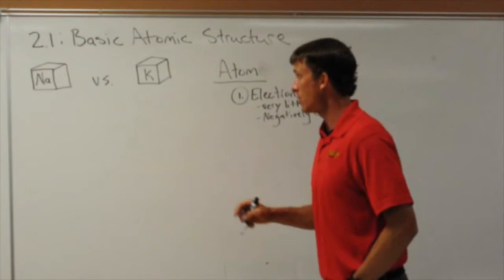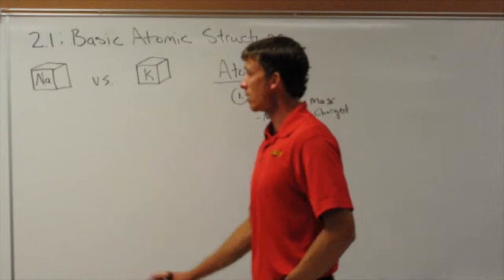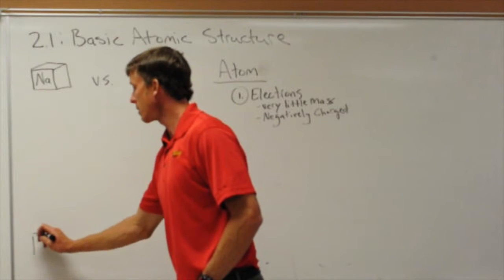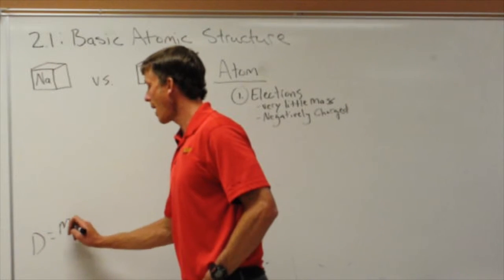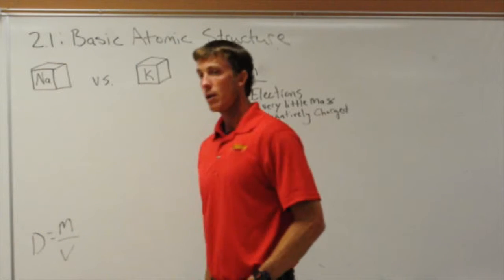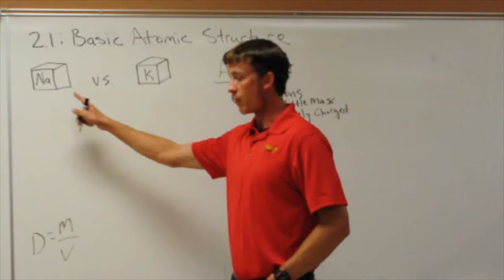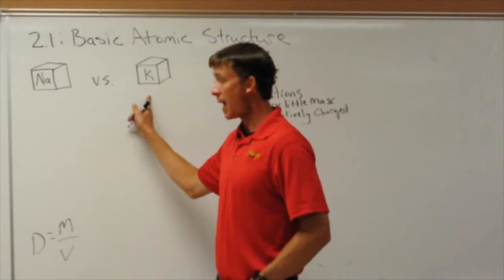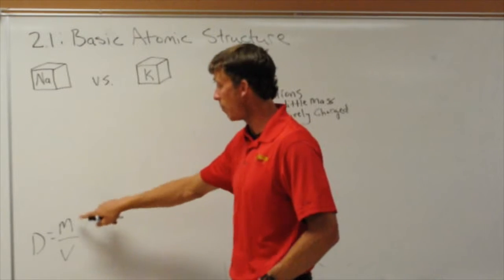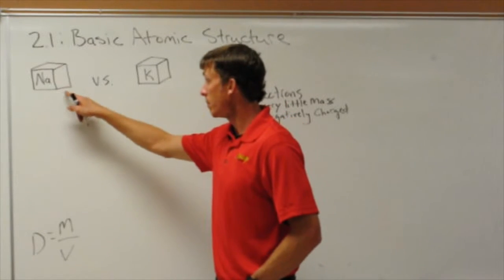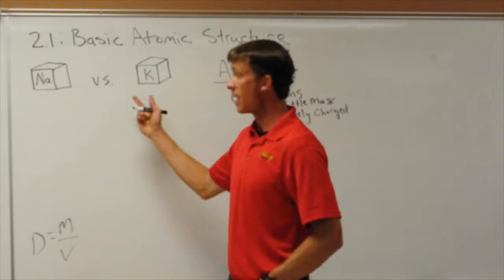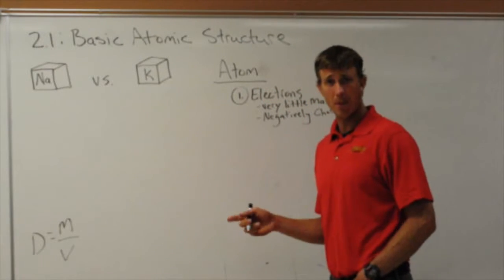So we know that density, again just a reminder, density is equal to mass divided by volume. So same volume, different mass. That's why potassium must, so potassium must have more mass than sodium if the volume is the same. So where does the mass come from?